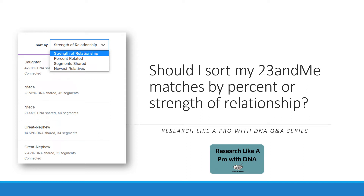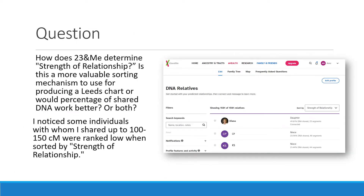Welcome to the Research Like a Pro with DNA question and answer series. I'm Nicole Dyer, and today our question is about sorting 23andMe matches — whether you should do it by percent or strength of relationship. The full question is: how does 23andMe determine strength of relationship? Is this a more valuable sorting mechanism to use for producing a leads chart, or would percentage of shared DNA work better, or both?